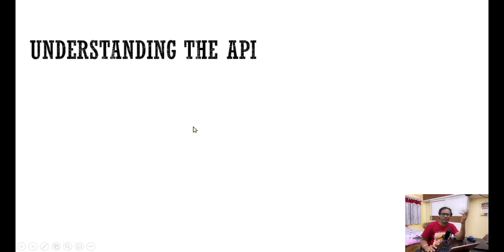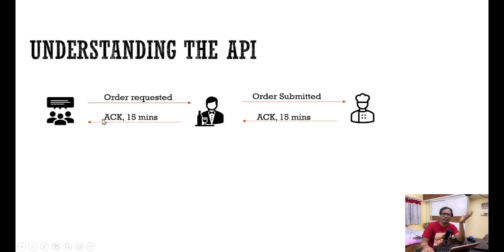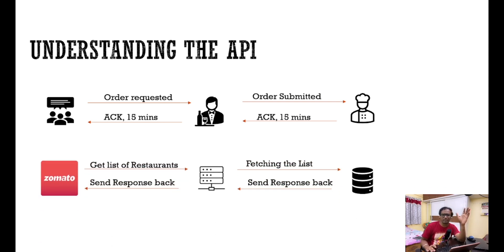Let's understand this better with an analogy. Say you went to a restaurant and you order something — you talk to a waiter. He takes your request, goes to the kitchen, submits the order to the chef. The chef tells him it will take 15 to 20 minutes, and the waiter comes back and tells you. Once the food is ready, he goes back to the kitchen and brings it to you. This waiter is a middle guy who takes your request and serves your response.